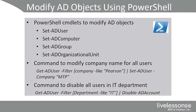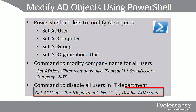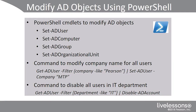Another example: what if we want to disable all of the users in the IT department? We'll again use piping in PowerShell. We'll begin with get-ad user dash-filter department like IT, then pipe to disable-ad account. So we're retrieving the users using the get command and then modifying them using the set-ad user commandlet or the disable-ad account commandlet.